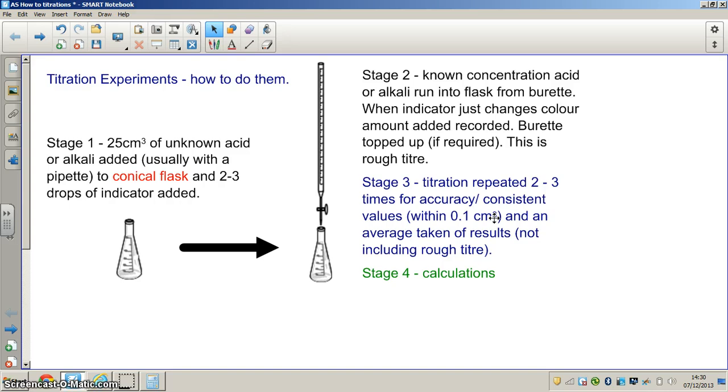When we've done that, what we then do is we take an average of the results. Now, when we do this, it's very important that we don't include our first rough titer, because that's our first go at doing this experiment. It's to give us an idea of how much either acid or alkali we need to add to our conical flask to effect complete neutralization. So what we do, if we've got two results which are within 0.1 of each other, we add them together, divide by two to get an average. If we've got three results which are within 0.1 cm³ of each other, we add the three results together to get an average. And then we proceed with that to the calculation stage.